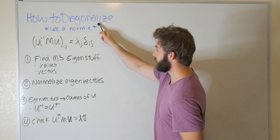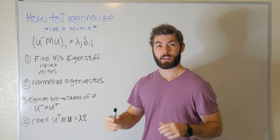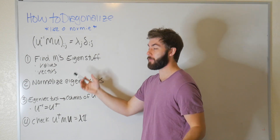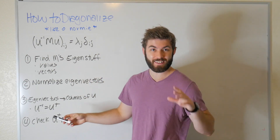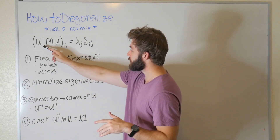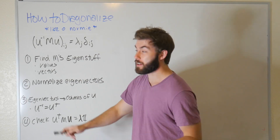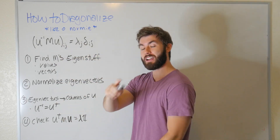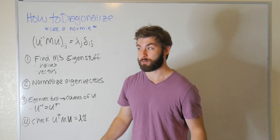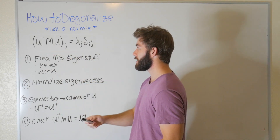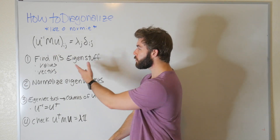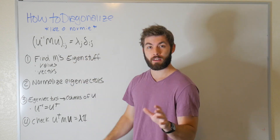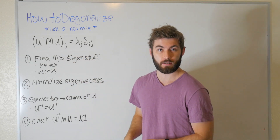Today I'm going to be showing you how to diagonalize a matrix by constructing a unitary matrix that does the job. This unitary matrix has interesting properties such that if we take the inverse times the matrix we want to diagonalize, times the unitary matrix, we should get a diagonal of just its eigenvalues — just matrix M's eigenvalues. This is more of a claim; I haven't proved this, so if you'd like to see this relationship proven in a future video, let me know in the comments section.